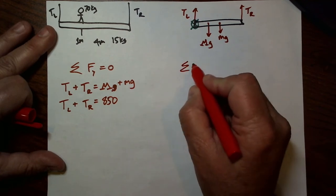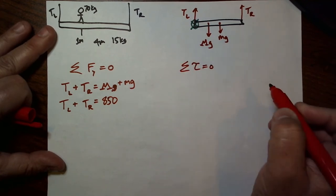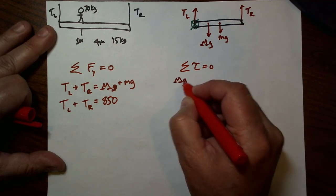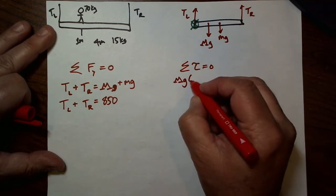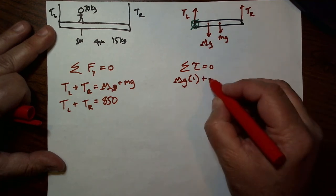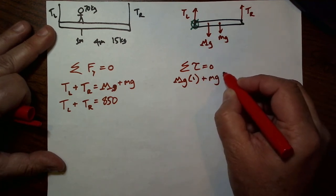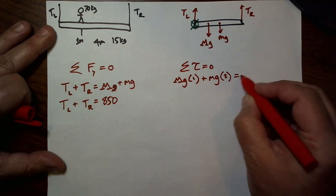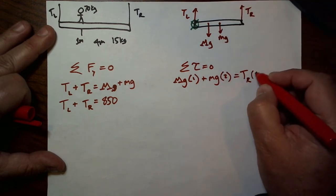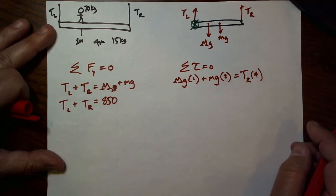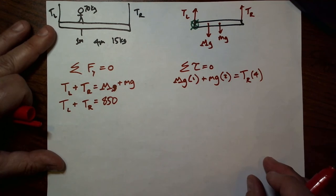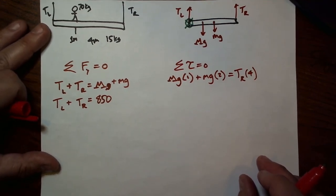Now it's time to look at all the torques. We'll do the clockwise torques first. There is an M times G acting at a distance of one meter away from the pivot point. That's capital M. There is a little M times G acting at a distance of two meters from the pivot point. And going the other way is TR acting at a distance four meters away. These are all perpendicular to the plank, so we don't have to have any sine or cosine kind of thing going on there.